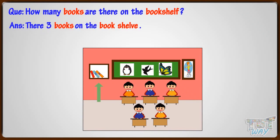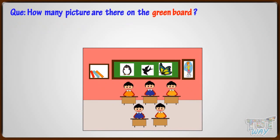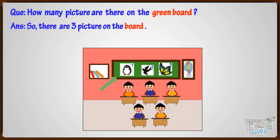How many pictures are there on the green board? One, two, three. So there are three pictures on the board.